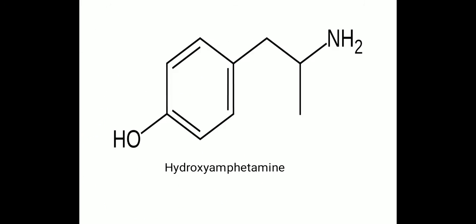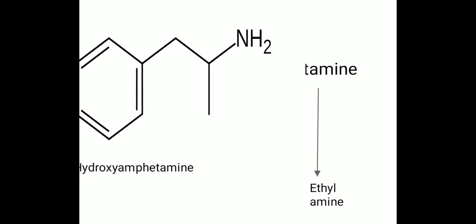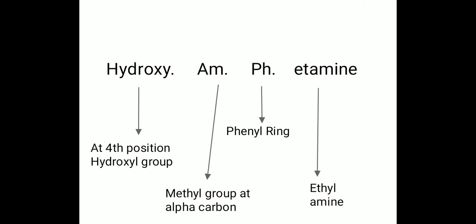The first drug is hydroxyamphetamine. In hydroxyamphetamine, 'hydroxy' indicates a hydroxyl group at the fourth position, 'M' indicates a methyl group at alpha carbon, 'pH' indicates a phenyl ring, and 'ethylamine' indicates the ethylamine chain.